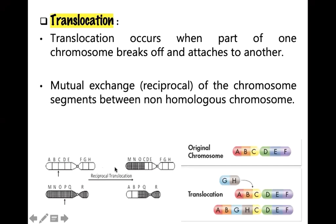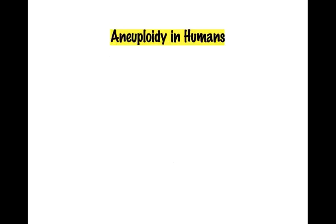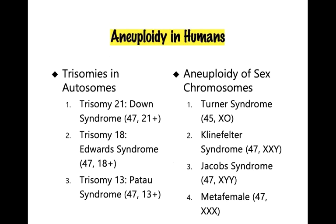There is a term referred to as aneuploidy in humans. We have trisomies in autosomes: trisomy 21, trisomy 18, and trisomy 13. We also have aneuploidy of sex chromosomes. In trisomy 21 (Down syndrome), the chromosome number is 47, compared to the normal human chromosome number of 46 — there is an extra chromosome. At position 18 and position 13, there are also extra chromosomes.